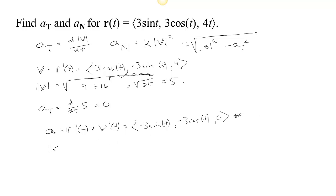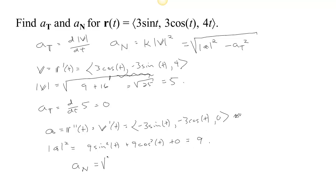The length of the acceleration squared — normally to find a length we take the square root, but here we square it — gives us 9 sin² t plus 9 cos² t plus 0, which equals 9. So finally we can find a_N: a_N is the square root of the magnitude of the acceleration squared, which is 9, minus a_T squared, which is 0.